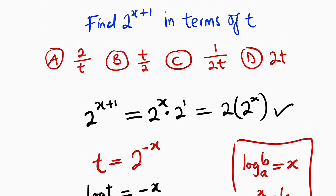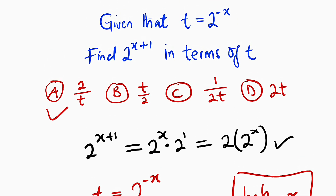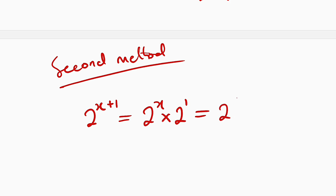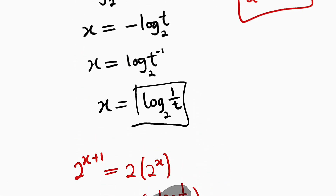And this is our answer, 2 divided by t. You can see it here as option A. So now let me apply the second method. First of all, let me simplify from one of the laws of indices. 2 raised to the power of x plus 1 is the same thing as 2 raised to the power of x multiplied by 2 raised to the power of 1, which is equal to 2 multiplied by 2 raised to the power of x. What I will be doing here is expressing 2 raised to the power of x in terms of t from our main equation.